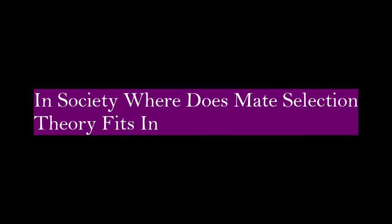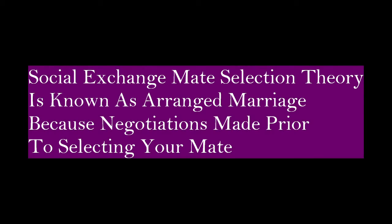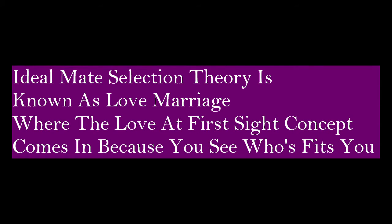The exchange mate theory relates to arranged marriage, because it is through negotiation and monetary or other arrangements that the match is made. By contrast, love marriage is where you choose on your own — that's where ideal mate theory comes in, meaning it is by your own choice.